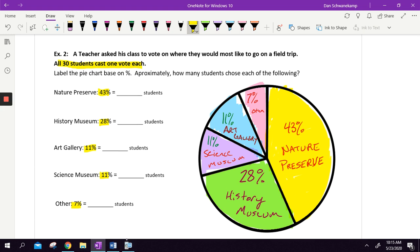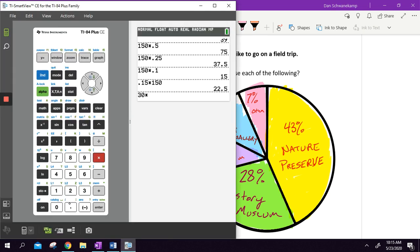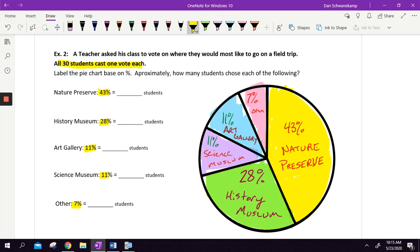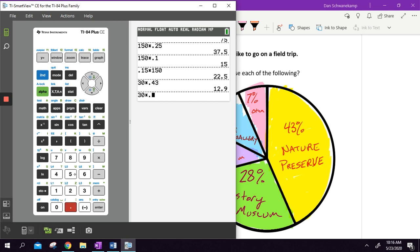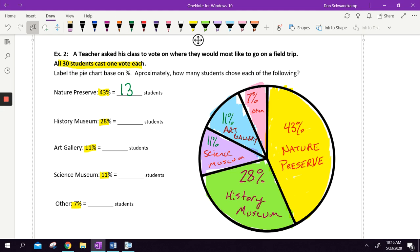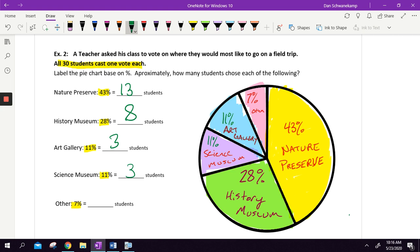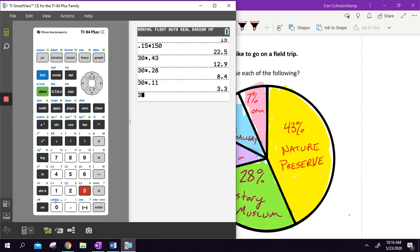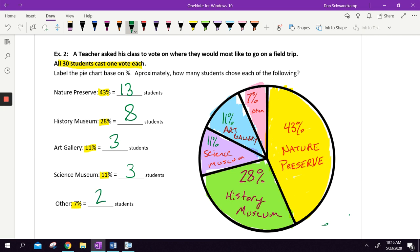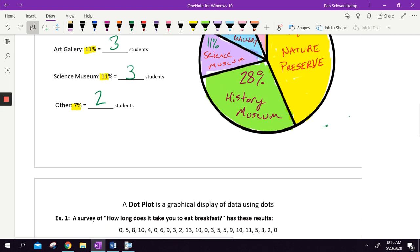43% went with the nature preserve. We had 30 total students, so we're going to go 30 times 0.43 because we want to multiply by the decimal. So 12.9 students, we're going to approximate that and round that up to 13 students. 28% pick the history museum, so 30 times 0.28, that's 8.4 students, we'll round that down to 8. Art gallery 11%, so 30 times 0.11, that is 3.3, we will round that to 3 for each. And then other, 7%, so 30 times 0.07 gets me 2.1 or 2 students. This is not perfect, it's approximately. But that just allows us to figure out what's going on.